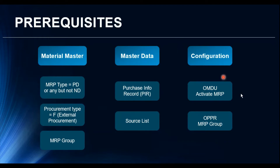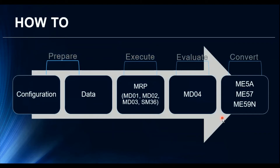These two are from the master data side. On the configuration side, we need to make sure that the plant in which you want to perform MRP is activated for Materials Requirement Planning using transaction OMDU, where you can activate the MRP indicator for the plant. Next, the MRP group configuration — to set planning parameters for a complete set of materials — is defined in transaction OPPR, where we can define the document type of the purchase requisition that will be created through MRP.